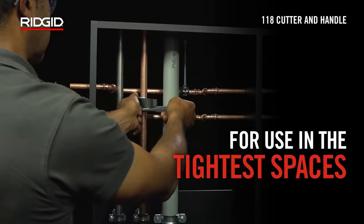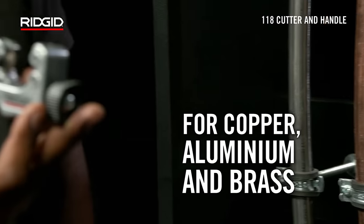Rigid 2-in-1 Midget Cutter can be used to cut hard and soft copper, aluminum and brass bar.